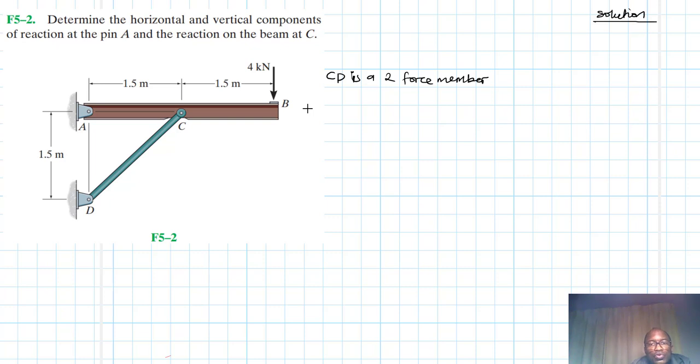It has only two forces at two locations and the forces are equal in magnitudes at the two locations. They are also opposite in direction and they are collinear.